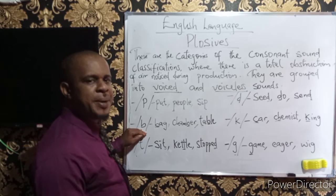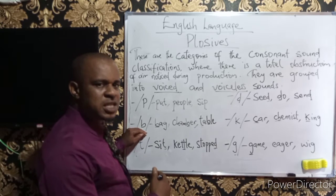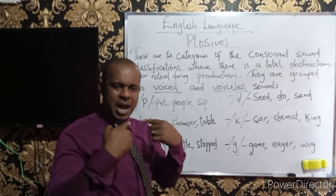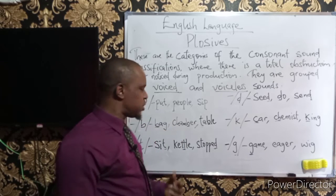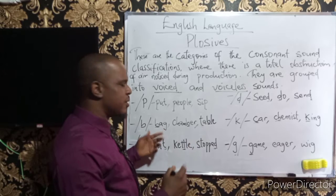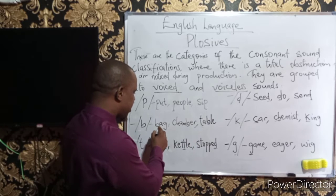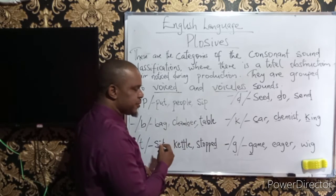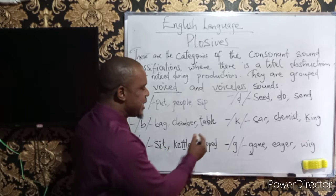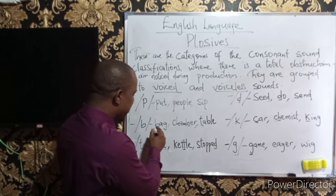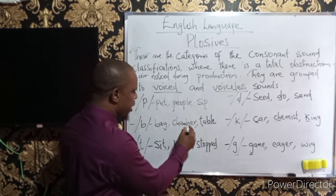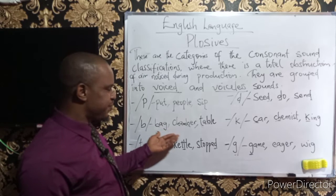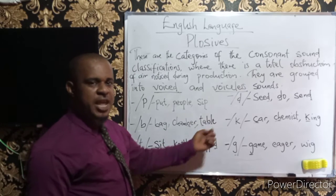Sound /b/ — if you demonstrate this sound you observe the vibration. For words like 'berg', 'chamber', and 'table' — we have the sound /b/ obtained at the beginning of 'berg', in the middle of 'chamber', and in the middle of 'table'.